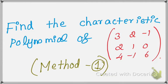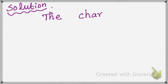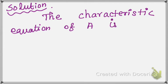Method 1 solution. The characteristic equation of matrix A is given by the formula |A - λI| = 0.